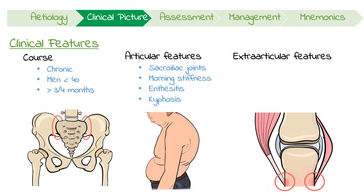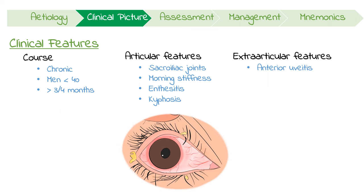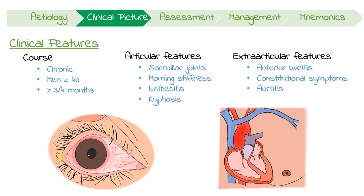Kyphosis is an exaggerated forward rounding of the back. If the costovertebral joints are involved, it can lead to reduced chest expansion. The most common extra-articular feature is acute anterior uveitis, experienced by up to 30% of patients at some point. Conjunctival injection around the rim of the iris is a characteristic feature and requires urgent referral to an ophthalmologist. Other manifestations include constitutional symptoms like weight loss and aortitis, which can cause aortic insufficiency.